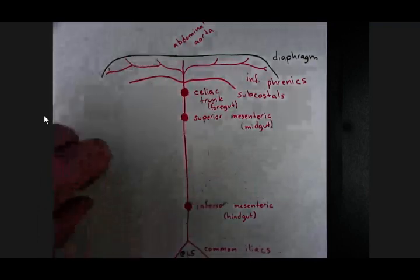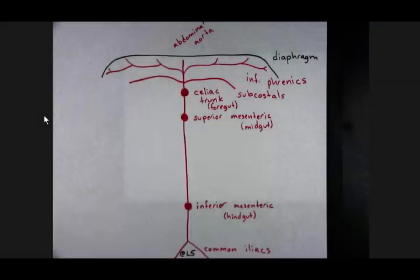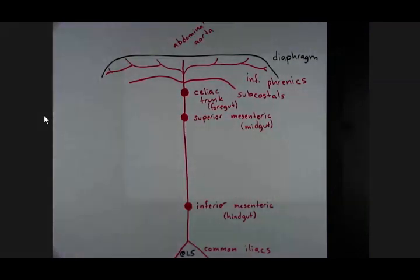We're going to go through what those viscera are as we do subsequent drawings detailing all the branches of these three unpaired arteries. Some more paired arteries off of the abdominal aorta include our gonadal arteries.